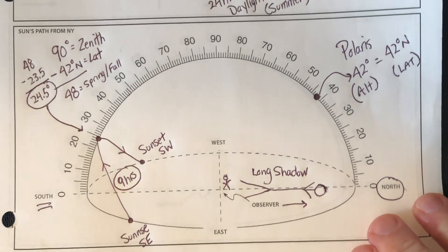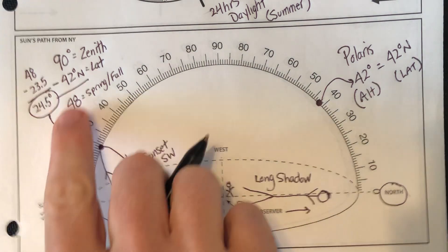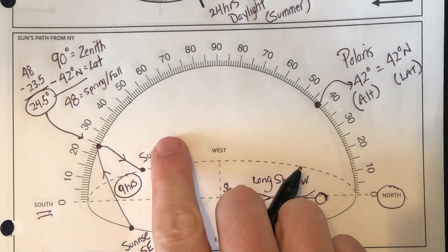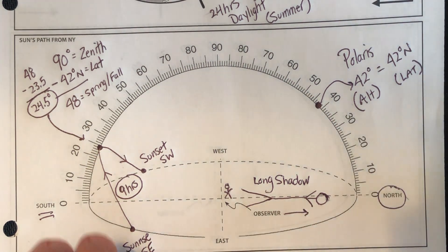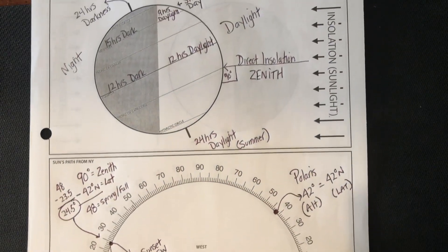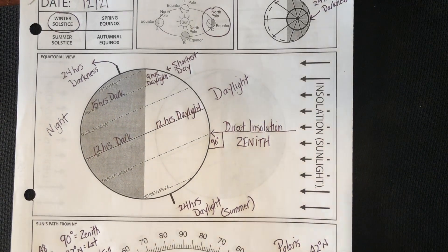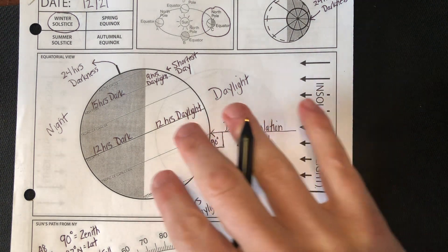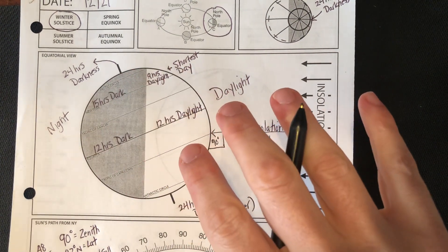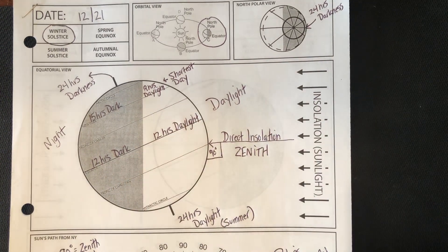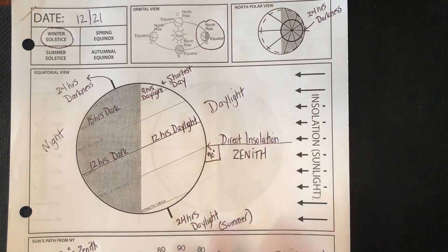So we've covered a little bit of everything: the noon sun altitude and how to figure that out, where it rises and sets, the noon altitude, the shadow, and the altitude of Polaris. I think we've covered everything for wintertime — December 21, winter solstice. Please make sure you check out my other seasons videos. Thanks for joining me, talk to you soon.